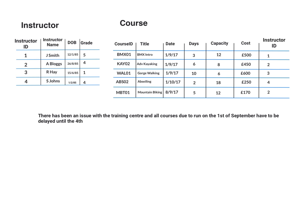In this example, there's been an issue with the training centre and all courses due to run on the 9th of December have to be delayed until the 11th. If we highlight the records that should change, it should be this one, this one, and this one — so you'll see that more than one row has to be changed.